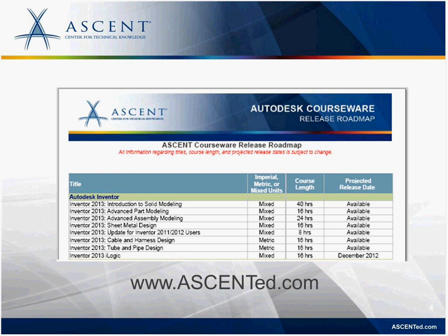One of the big questions I get every year is how do I determine the release dates for our courseware. Basically I look at history from the previous year, talk to our instructors, our ATC partners, and our customers to figure out which courses are most in demand. From there I develop a release schedule that we do publish on our website — what we call our release roadmap on ascented.com — which gives you the projected dates that everything is expected to be released.